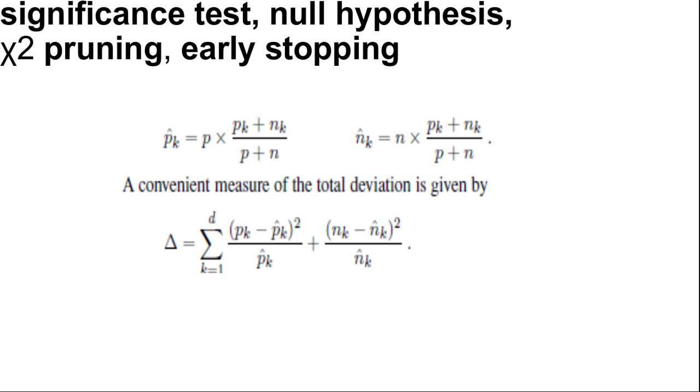We can measure the deviation by comparing the actual numbers of positive and negative examples in each subset pK and nK with expected numbers p̂K and n̂K assuming irrelevance. Here p̂K equals p times (pK+nK)/(p+n) and n̂K equals n times (pK+nK)/(p+n). A convenient measure of the total deviation is given by delta.